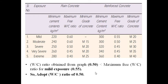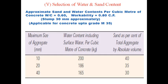If the water-cement ratio obtained from the graph were 0.6, and the maximum free water-cement ratio is 0.55, we could not adopt 0.6 because it exceeds 0.55. In that case we would have to bring it down to 0.55. That is what the table depicts.